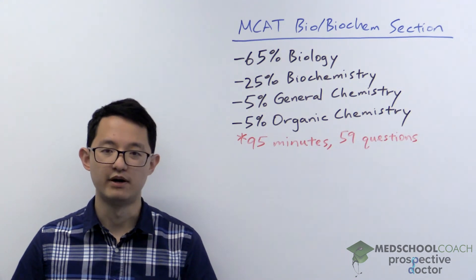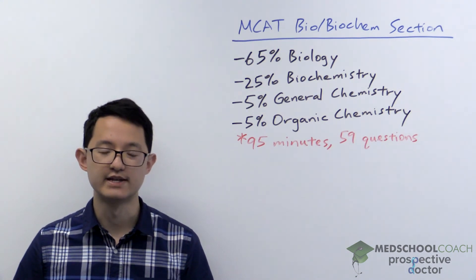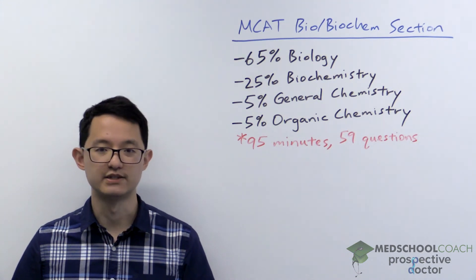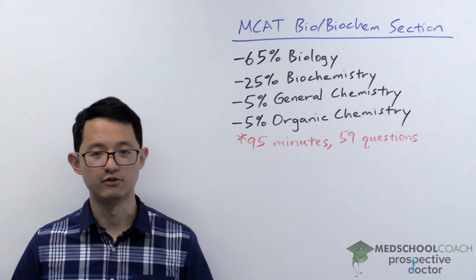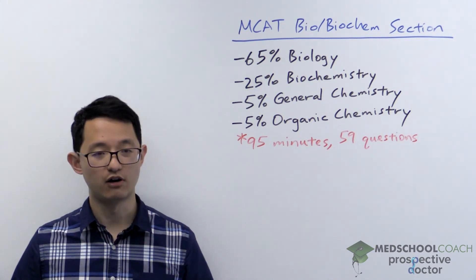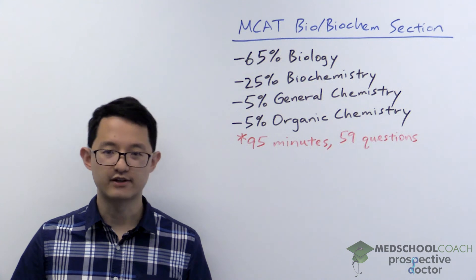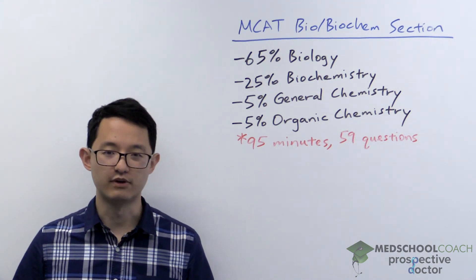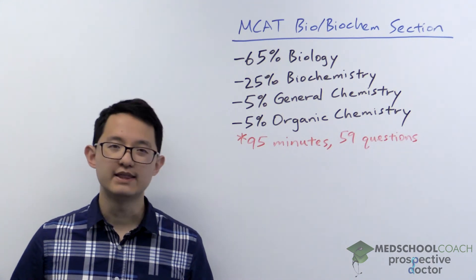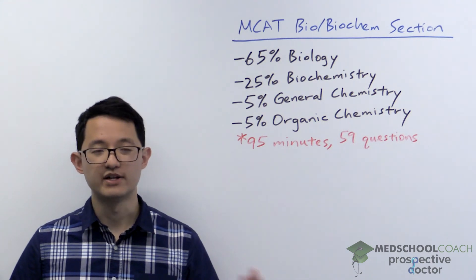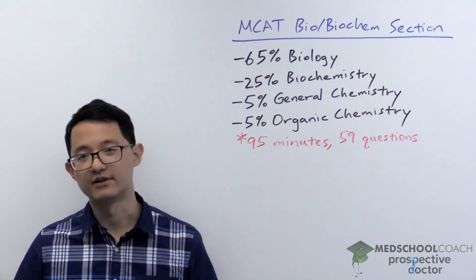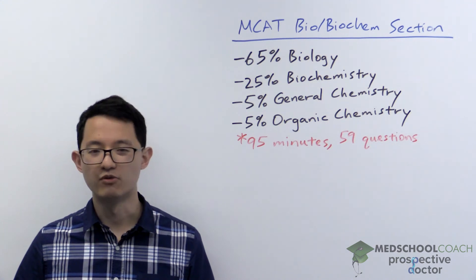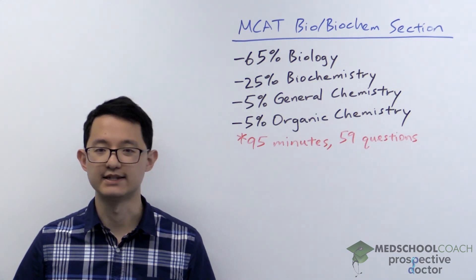Another reason why the MCAT bio biochem section is difficult is because many of the passages in this section are adapted from peer-reviewed scientific journal articles. So they often have a lot of science jargon and are often introducing these figures and graphs that students that don't have much research experience may not be familiar with. And it's one thing to know that western blot separates proteins, southern blot separates DNA, and northern blot separates RNA, but that doesn't really tell you why scientists use these techniques in the first place.